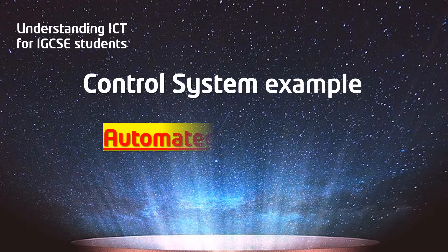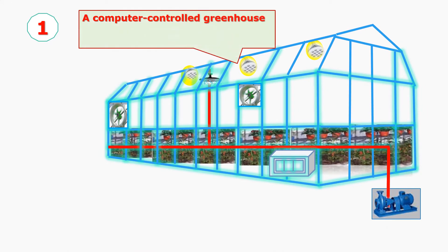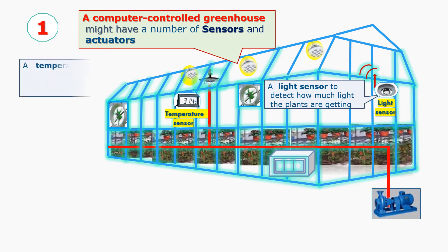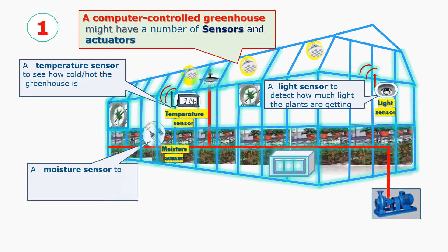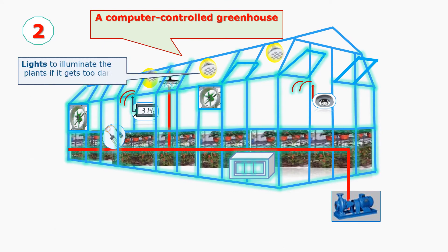An example of a control system is an automated greenhouse. A computer-controlled greenhouse might have a number of sensors and actuators working together. A light sensor is used to detect how much light the plants are getting, a temperature sensor is used to see how cold or hot the greenhouse is, and a moisture sensor is used to see how wet or dry the soil is.